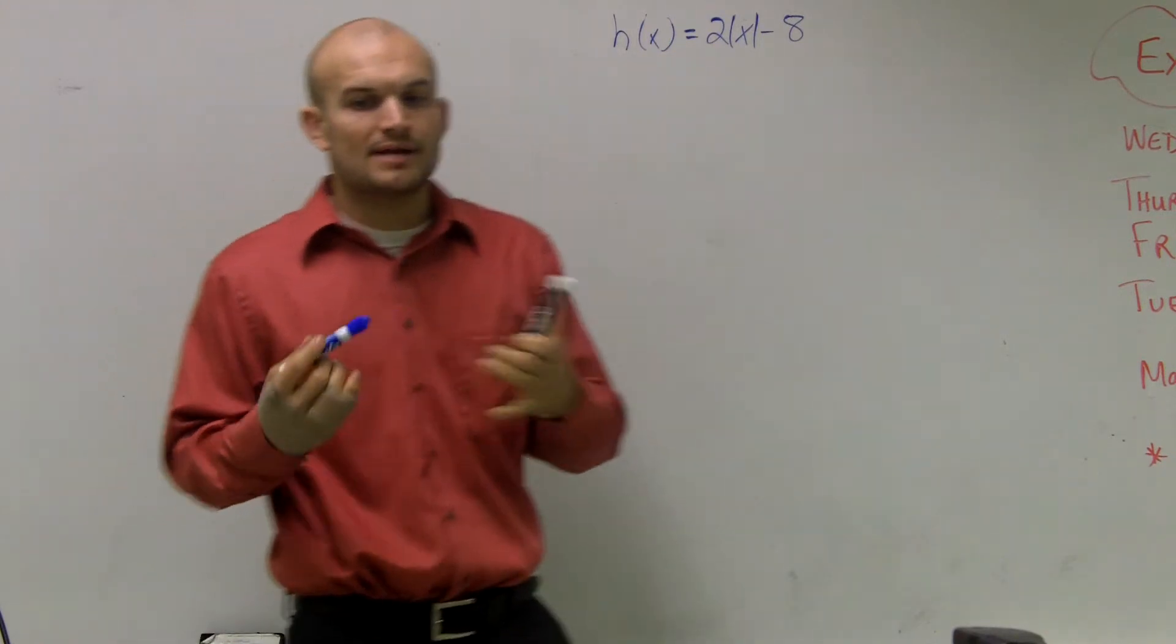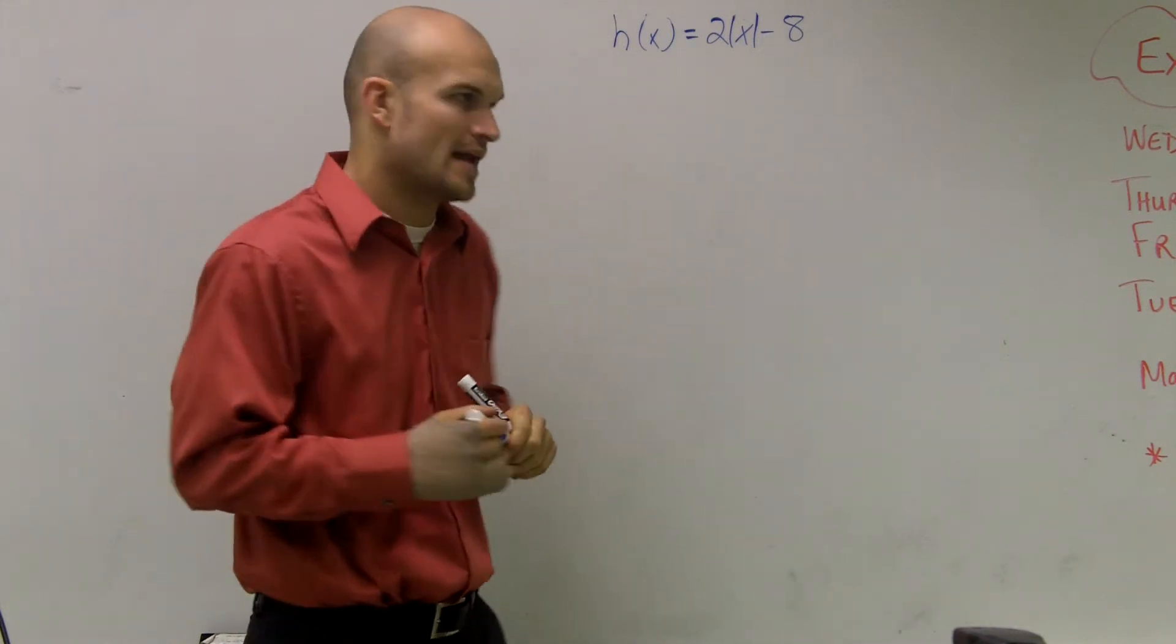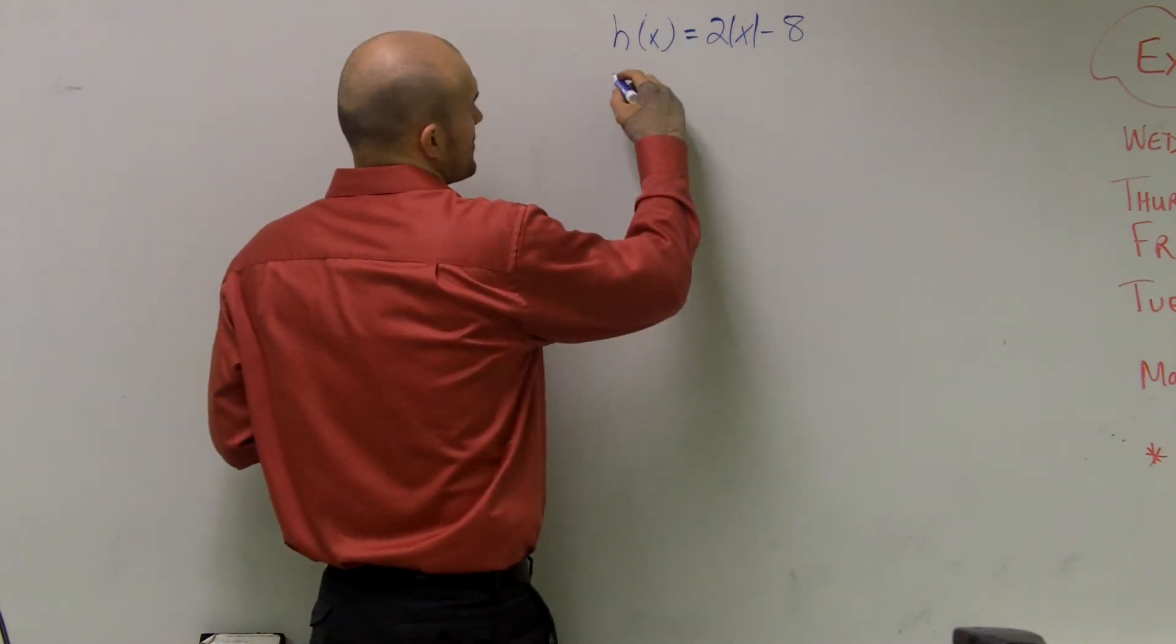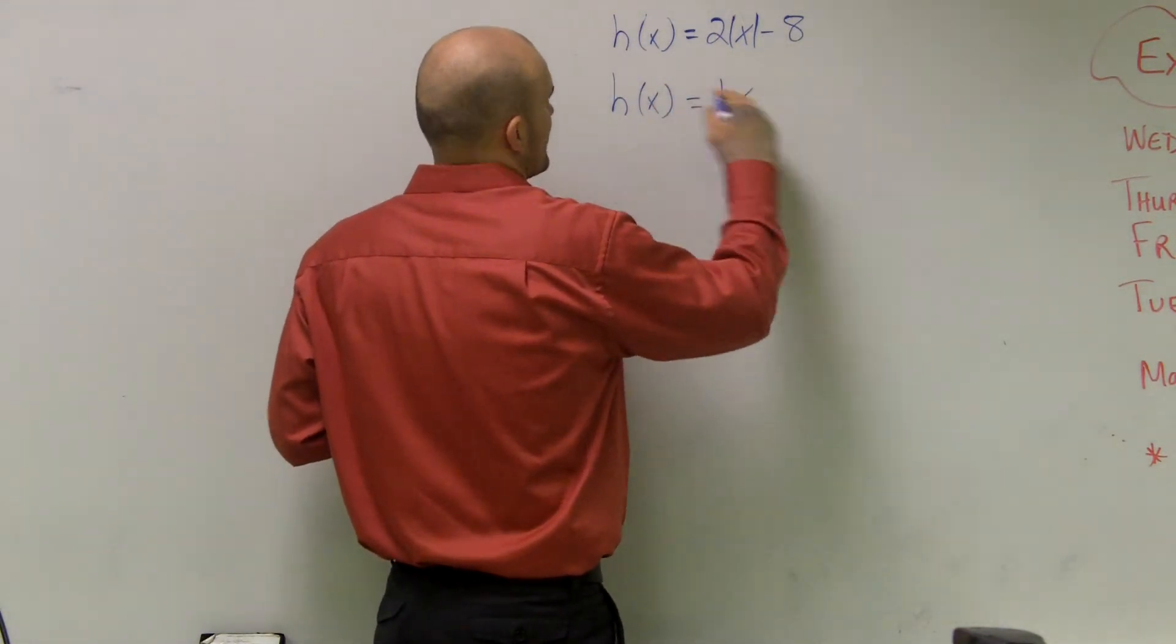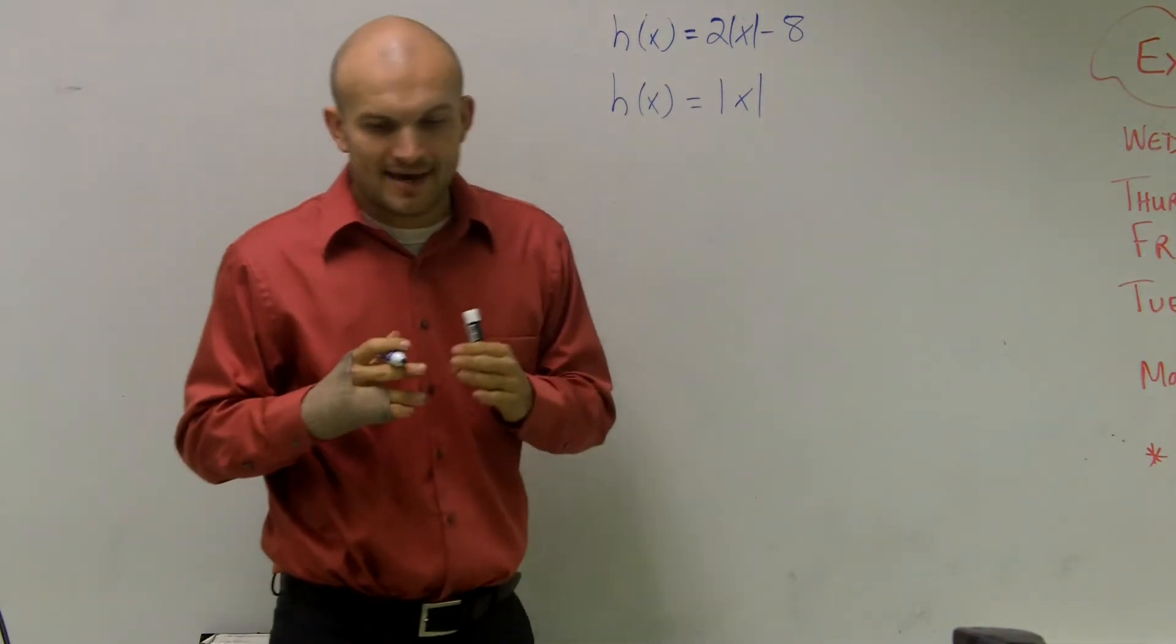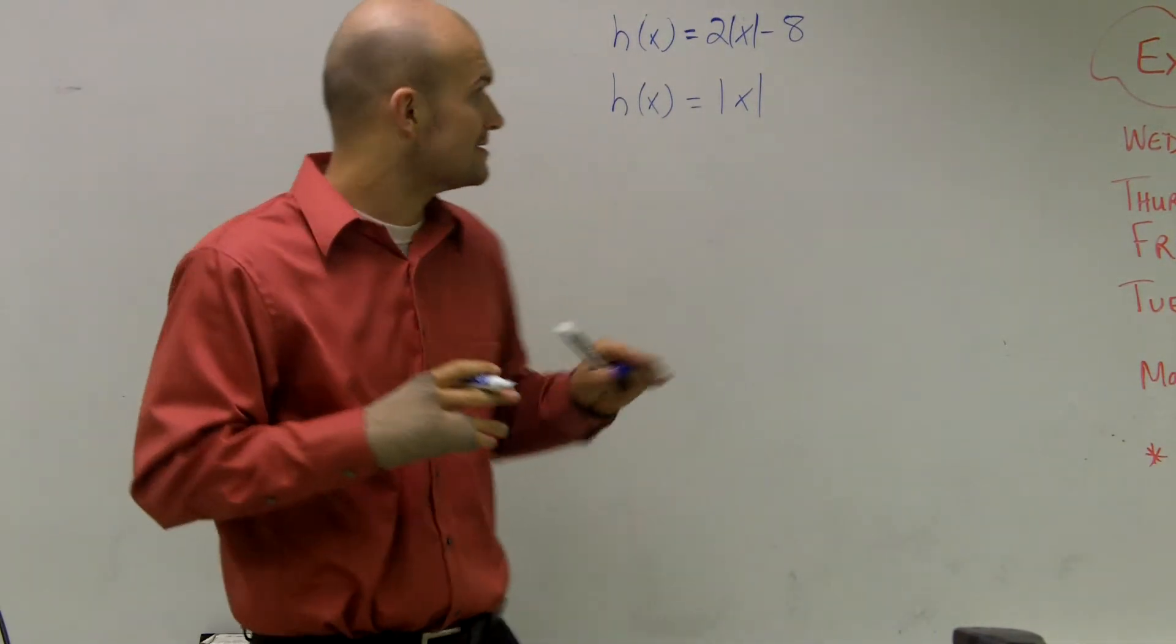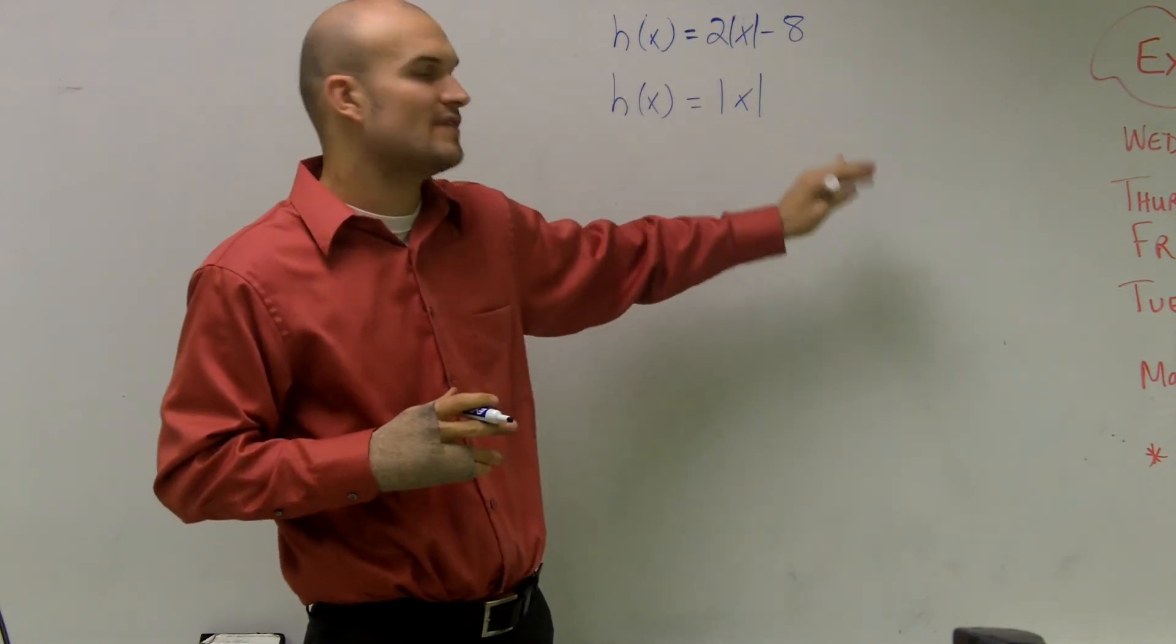Now, to do this problem, the main important thing that I think is easiest to do is to understand what the parent function is of an absolute value function. So the parent function is h of x equals the absolute value of x. And what I mean by that is whatever numbers I plug in for x, I'm going to take the absolute value.